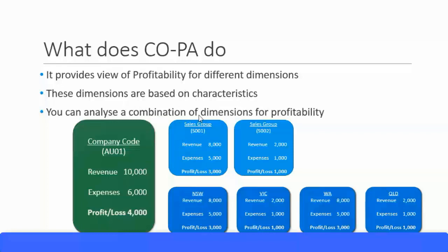For example, characteristics can include sales group, customer, customer groups, material, material groups, countries, regions, and states. You have your company code and your financial statement — for example, the P&L statement — because the CO module always deals with the P&L statement.